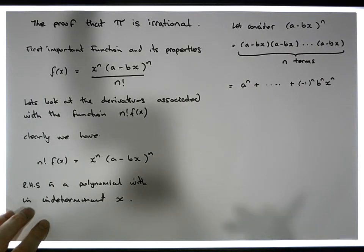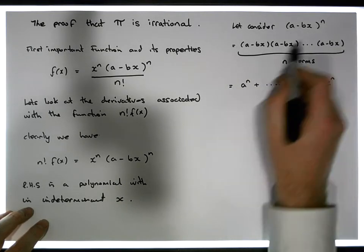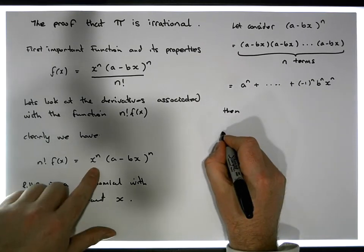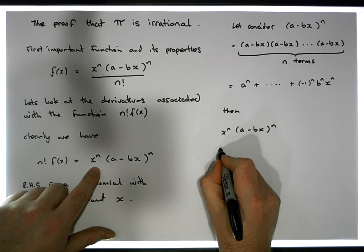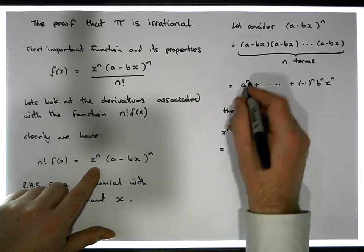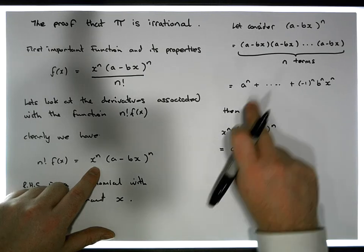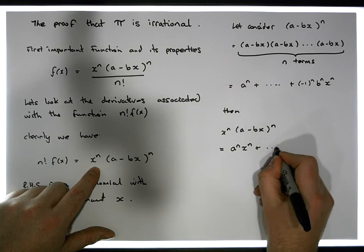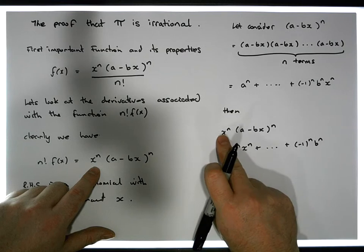Now let's consider: if (a minus bx) to the n is equal to this expansion, then x to the n times (a minus bx) to the n must equal something like this — it's x to the n multiplied by each one of these terms. So we end up with a to the n times x to the n, plus x to the n multiplied by each successive term, all the way down to minus one raised to the power of n times b to the n.